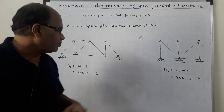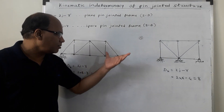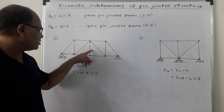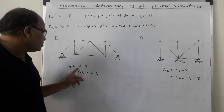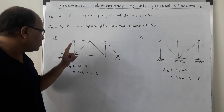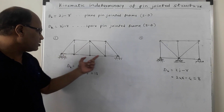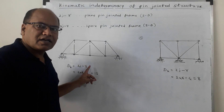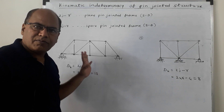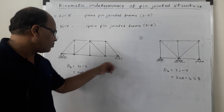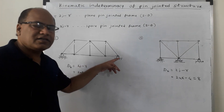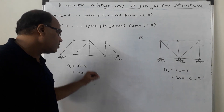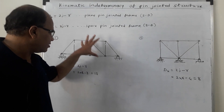Let us go through examples of plane pin-jointed frames. For the first truss, dk = 2j − r. Counting the joints: 1, 2, 3, 4, 5, 6, 7, 8 — there are 8 joints, so 2j = 16. The supports are a roller (1 reaction component) and a hinge (2 reaction components), giving r = 3. Therefore dk = 2×8 − 3 = 13. The degree of kinematic indeterminacy for this truss is 13.